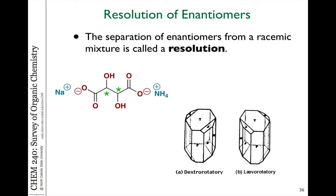In order to separate enantiomers, one needs to have something else chiral to interact with, or you have some macroscopic property which manifests, such as the case of Louis Pasteur's crystalline salts that showed mirror image shapes for those crystals. He was able to make those large enough that he could separate them with a pair of tweezers.